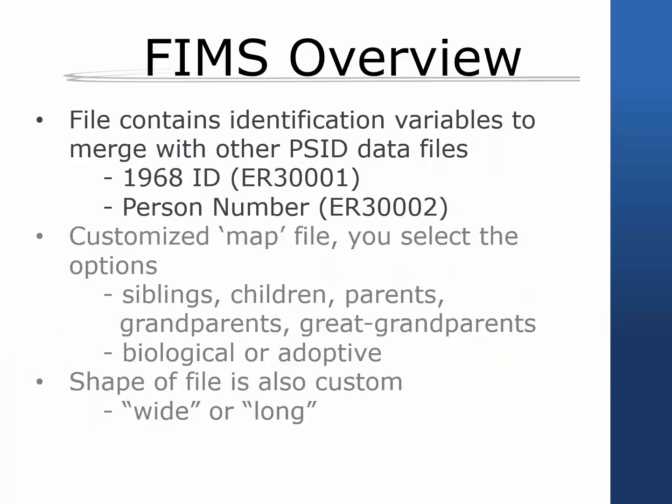FIMS creates a customized map file that contains the identification variables of the relatives you choose to examine. For example, you may be interested in biological grandparents as the relative of interest. FIMS would then generate a file that contains the IDs of all individuals with that relationship who have a 1968 ID and person number. The shapes available are wide, defined as one observation per grandchild, and long, defined as one observation per grandchild-grandparent pair.